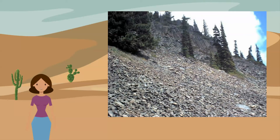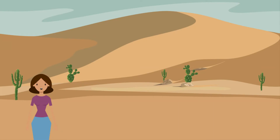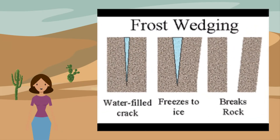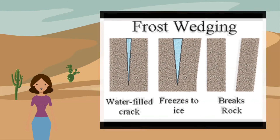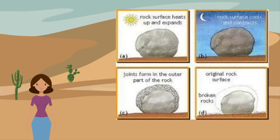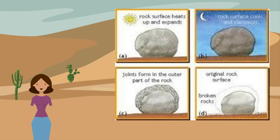There are two main types of weathering: physical and chemical. In high mountains and high latitudes, most physical weathering is by freeze-thaw. When the temperature drops below zero degrees Celsius, water freezes inside cracks in the rocks, and the ice can split the rocks.